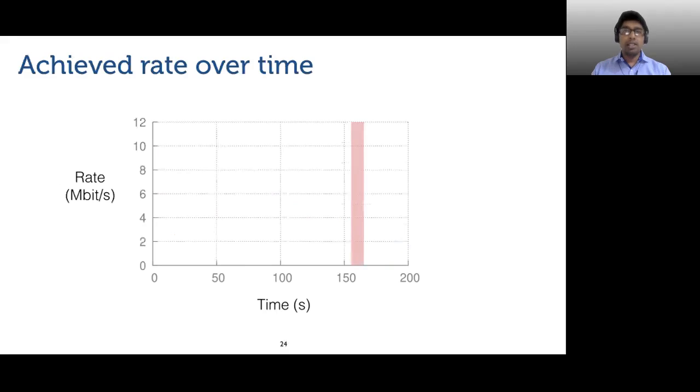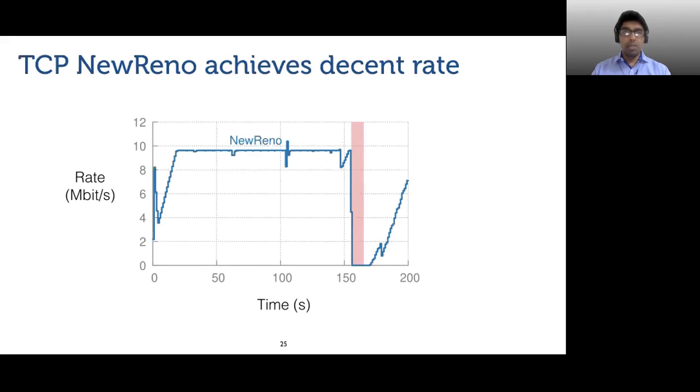Now, let us compare how loss-based and delay-based congestion control schemes react to network changes. For this, we look at achieved rate over time, which is the achieved throughput averaged over 100 millisecond intervals. The y-axis here represents this rate. TCP new Reno achieves fairly good rate over time, with a large fraction of the entire period seeing rate equivalent to bandwidth.